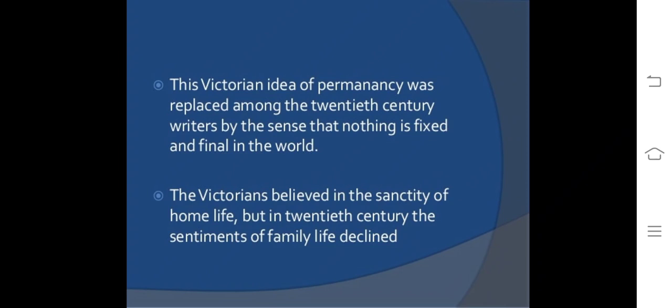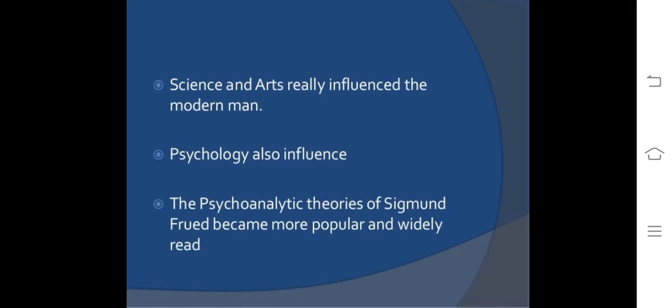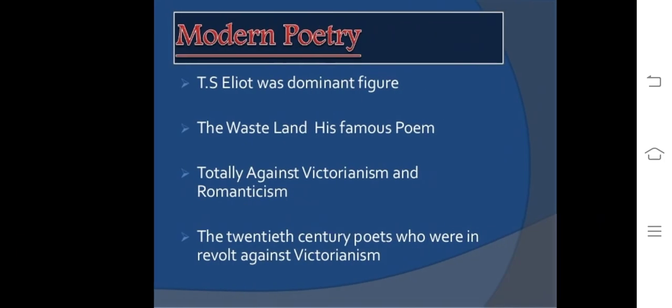Victorian ideas of permanency were replaced among 20th century writers by the sense that nothing is fixed and final in the world. The Victorians believed in the sanctity of home life, but in the 20th century the sentiments of family life declined. Science and arts influenced the modern man. Psychology also influenced this period. The psychological theories of Sigmund Freud became more popular and widely read.